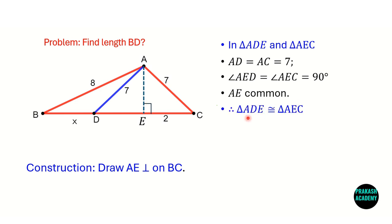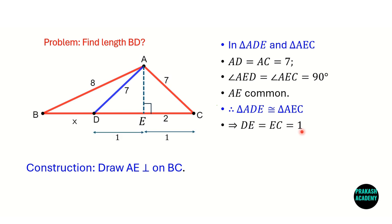So triangle ADE is congruent with triangle AEC. This means DE is equal to EC. The total length DC is given as 2 units, so DE and EC are each 1 unit.